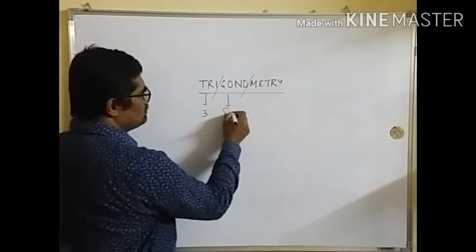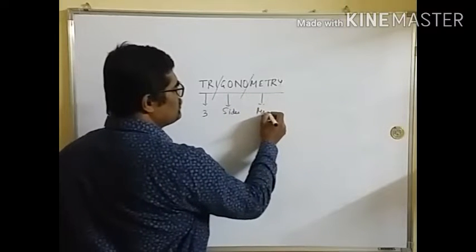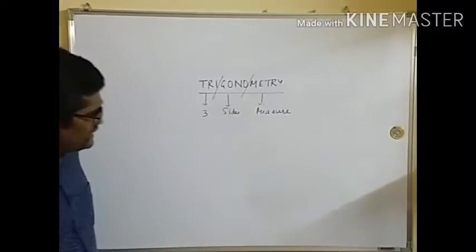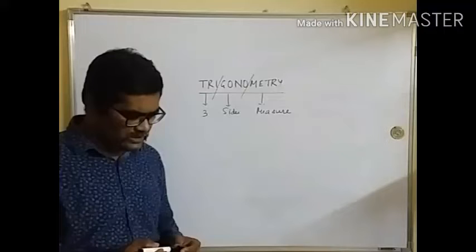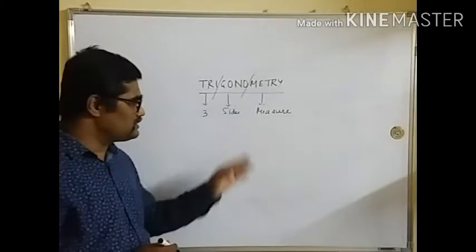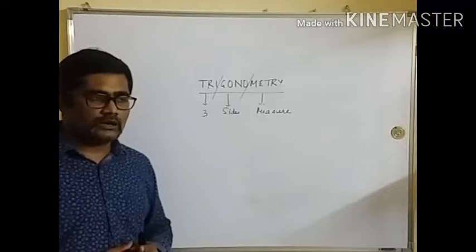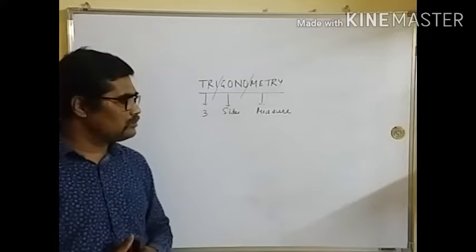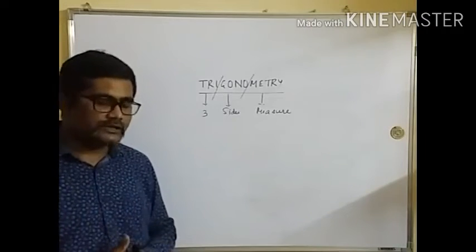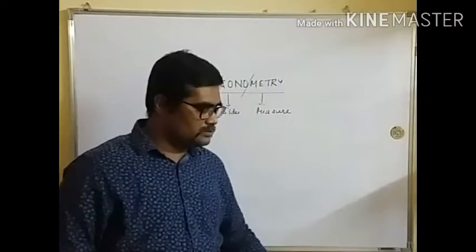Tri means three, gon means sides, metri comes from metria meaning measure. So three sides measure - what does this imply? You have to do something with a polygon with three sides, meaning you have to do something with a right triangle. We'll be getting the definitions of six ratios from this right triangle only. I'll review quickly the definitions because they are more important.